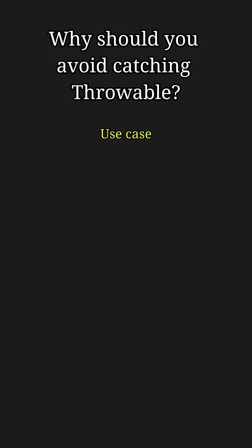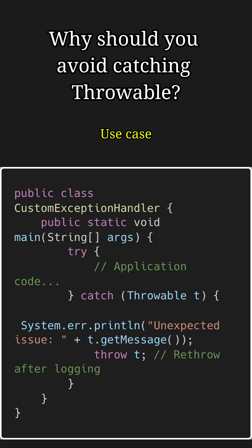While catching Throwable is generally discouraged, there is a rare use case for it, which is logging unhandled issues at a global level. For example, here we catch Throwable in the application code to log unexpected errors before re-throwing them.